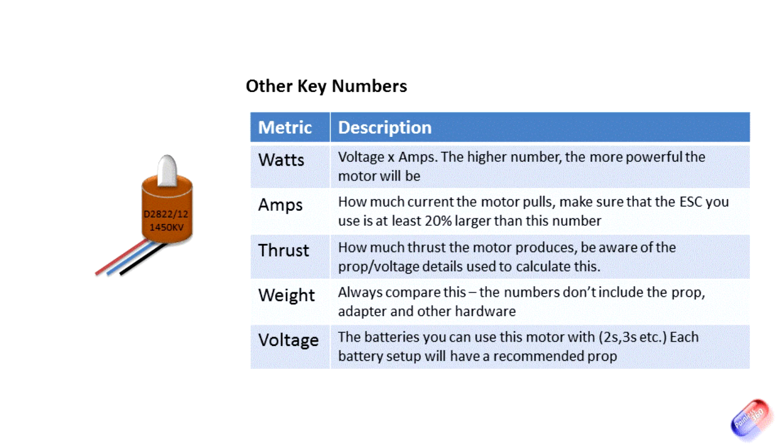Thrust: that's how much thrust the motor produces. You will need to double check what prop and battery combo it was using. You'll probably find that there are thrust figures for both two, three, four, five, or even six S LiPo batteries, and each battery will have a particular prop size. I'll come on to that again later.